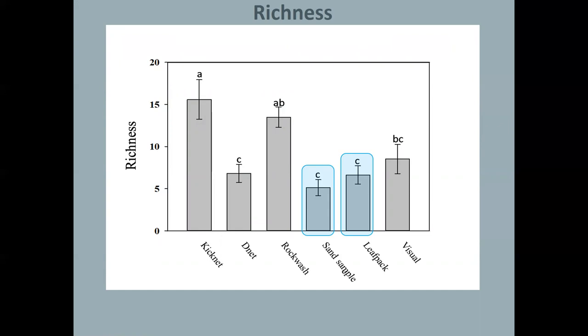And then sand sample and leaf pack getting lower at richness with that as well. So that's kind of giving us a first look at how things are performing. We knew that Kicknet would do very well. That is a sampling method that is just standard for water quality protocol. We get a lot of material with it, but we also get a lot of different taxa with it.